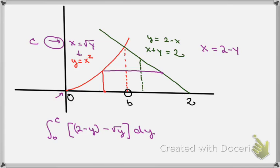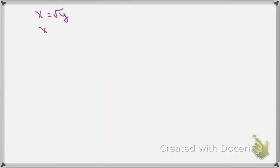So I've got the two functions: x is equal to the square root of y, and the other one was x was equal to 2 minus y. So the way that we find a point of intersection, we set the two functions equal to each other. So that means that the square root of y is equal to 2 minus y.